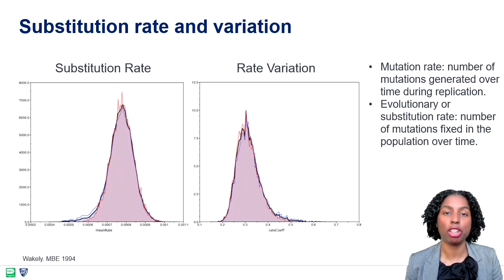The mutation rate measures the number of mutations generated over time during replication. On the other hand, the evolutionary or substitution rate measures the number of mutations fixed in the population over time. Variation among nucleotide sites and differences in the probabilities of change among the four nucleotides have been observed in nearly every molecule examined.